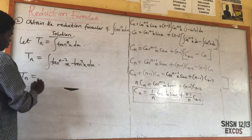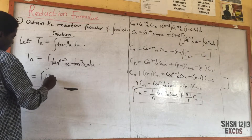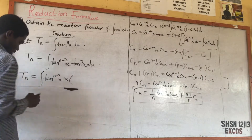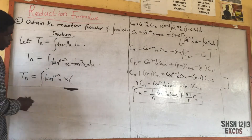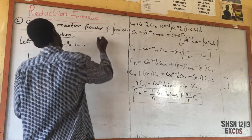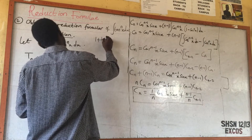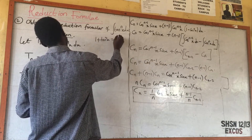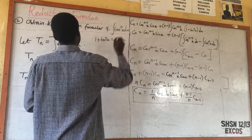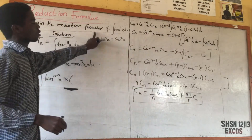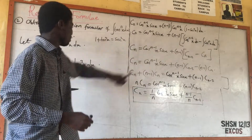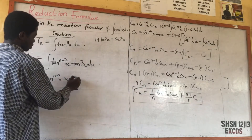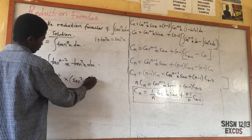T_n equals the integral of tan^(n-2)(s) multiplied by — recall from trigonometry that 1 + tan²(x) = sec²(x), so tan²(s) = sec²(s) - 1. This one will now be multiplied by sec²(s).